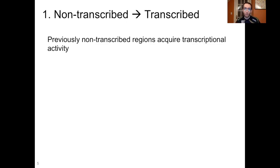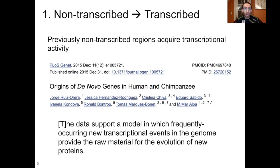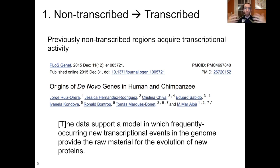One of the two things you need to do is go from non-transcribed to transcribed — a previously non-transcribed region of DNA that acquires transcriptional activity. Turns out this is surprisingly common. Here is one example: a paper called Origins of De Novo Genes in Human and Chimpanzee from 2015. A quote from the abstract: 'The data support a model in which frequently occurring new transcriptional events in the genome provide the raw material for the evolution of new proteins.' In other words, a region of DNA gains the ability to be transcribed, and then that pool of transcribed but non-translated regions can subsequently become new protein-encoding genes.